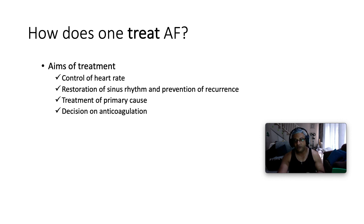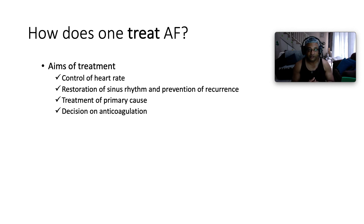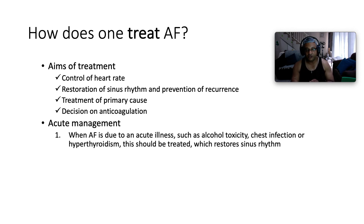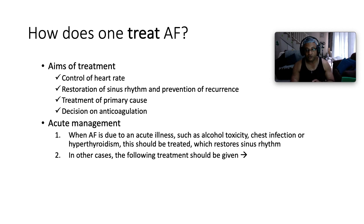How does one treat atrial fibrillation? Our objectives are to control the heart rate, restoration of sinus rhythm, and prevention of recurrence. We'll discuss rate versus rhythm control, treatment of the primary cause, and whether or not to anticoagulate the patient. Acutely, whenever atrial fibrillation is due to an acute illness such as alcohol toxicity, chest infection, or hypothyroidism, these should each be individually treated and managed, which will probably restore sinus rhythm.